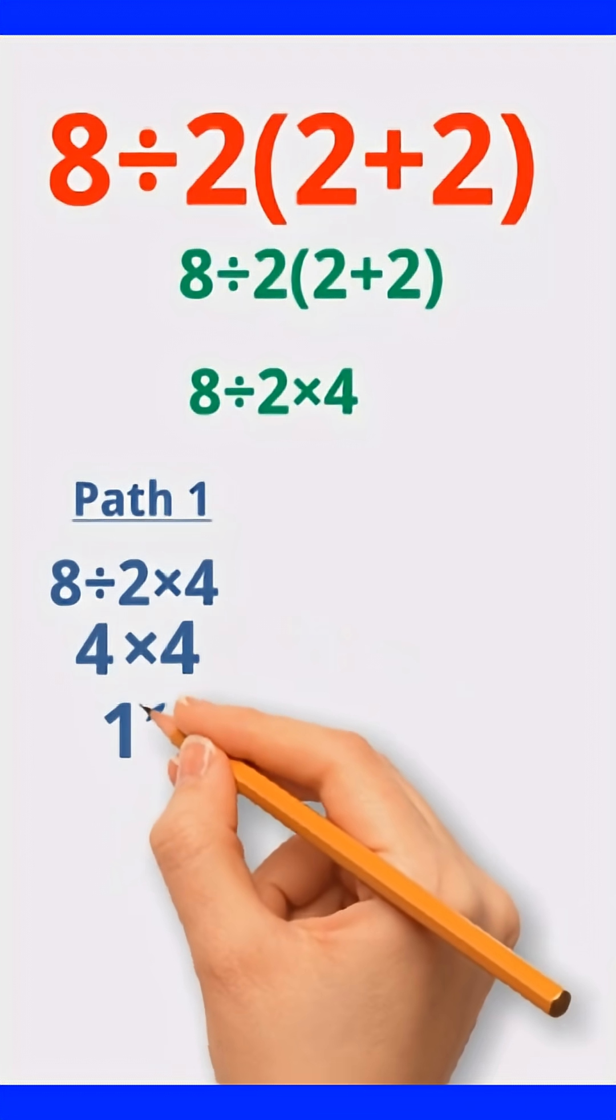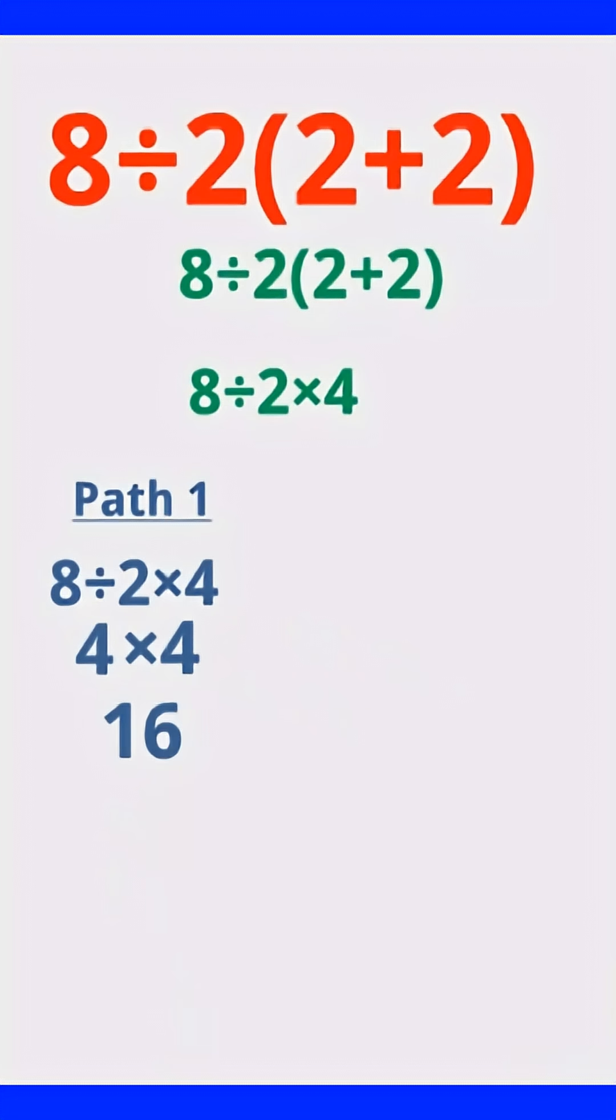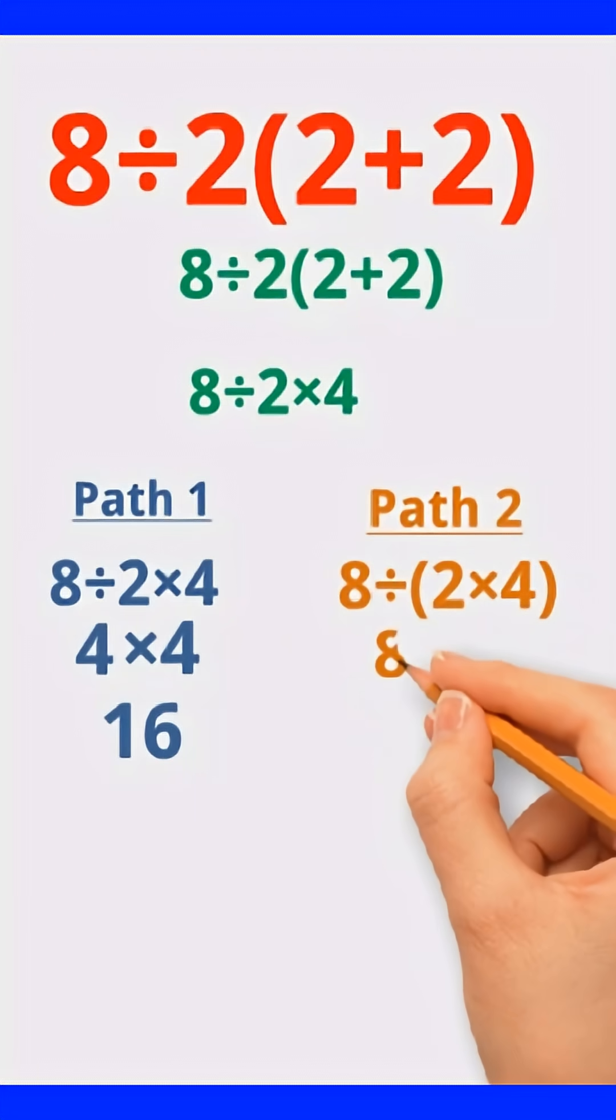Path 2. Assuming hidden brackets. If someone reads it as 8 divided by the quantity 2 times 4, that becomes 8 divided by 8, which equals 1.